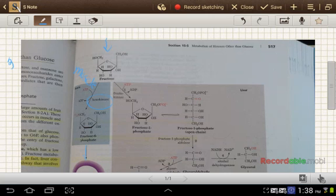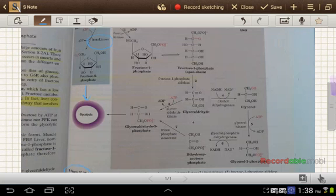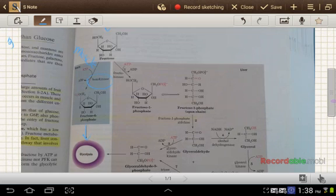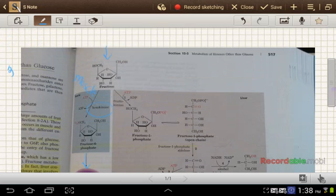And then we can continue on into glycolysis using fructose 6-phosphate, just as if we were starting from glucose. We just don't have to do that one isomerase reaction.